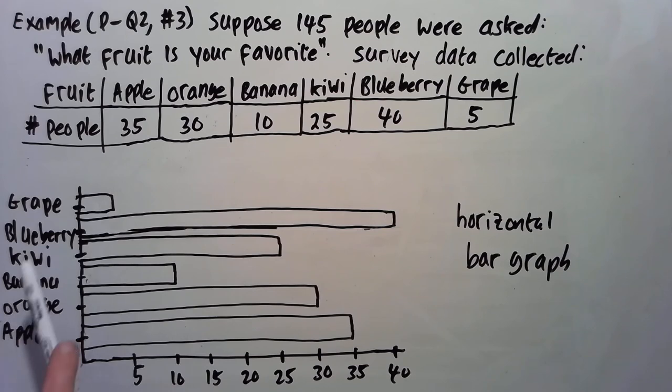Okay, so I've graphed now a horizontal bar graph. So again I just put the labels, the fruit names on the y-axis and the frequencies on the x-axis. So this would be a horizontal bar graph. So the apple would be 35. Orange would be 30. Banana, 10. Kiwi, 25. Blueberry, 40. Grape, 5.